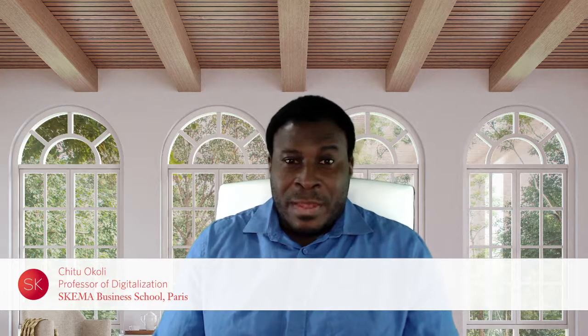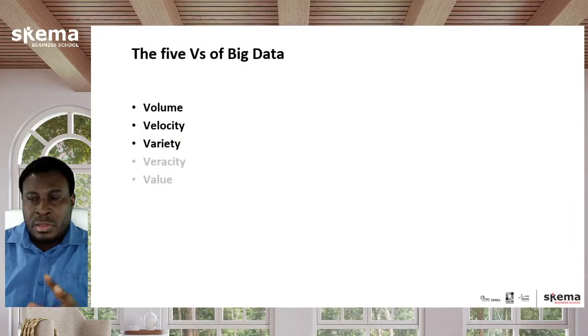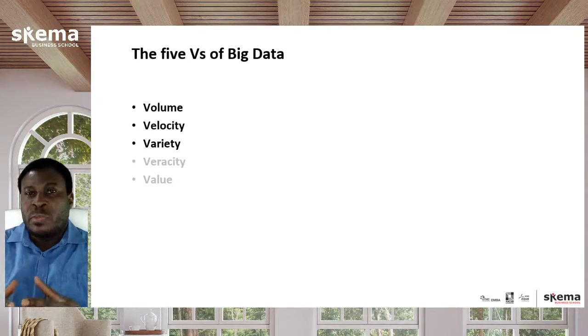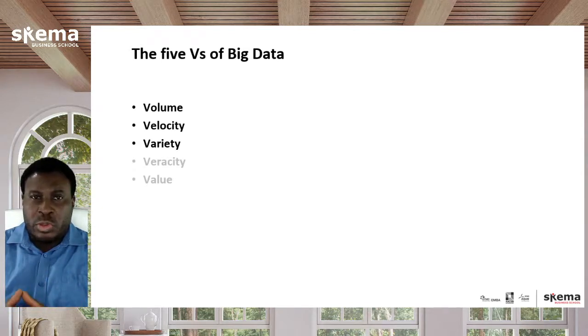Big data is a big topic, so we're going to break it down from a managerial perspective. This is the first of two videos. There are different ways of characterizing big data, but one of the more popular is the five V's perspective. Originally there were just three V's, and in this first video we're going to look at the first three: volume, velocity, and variety.